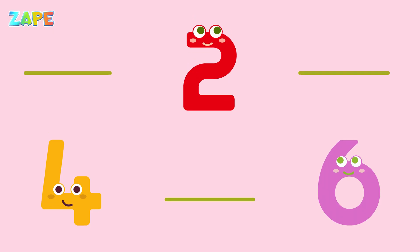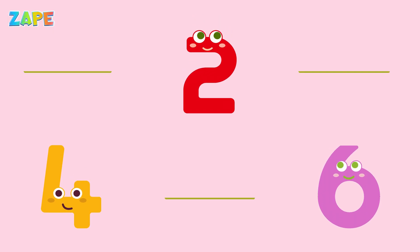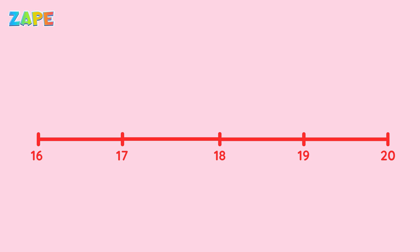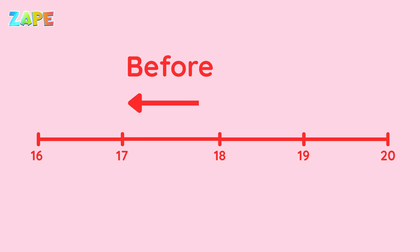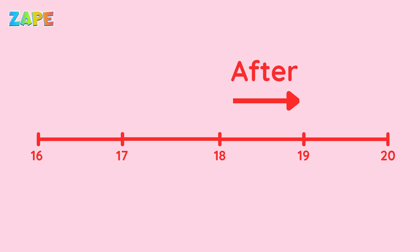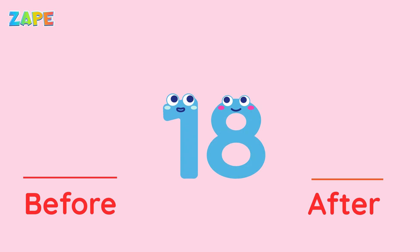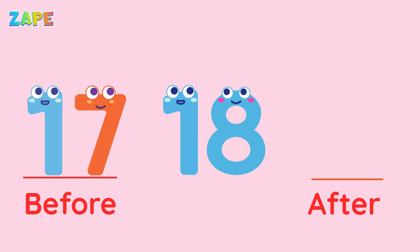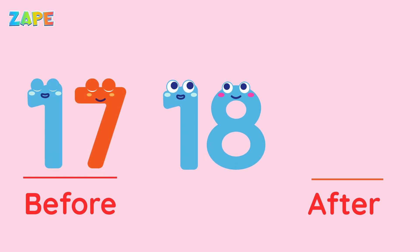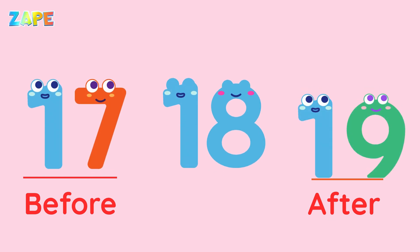Let's remember what we learned today. When we say before, we go one number back. When we say after, we go one number forward. Example: before 18 is 17, after 18 is 19.